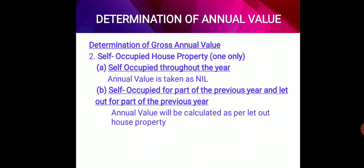Determination of gross annual value for self-occupied house property: only one property can be considered as self-occupied. Case A: self-occupied throughout the year — the annual value is taken as nil. Case B: self-occupied for part of the previous year and let out for part of the previous year — annual value will be calculated in the same manner as discussed for let out house property. If let out for any part, it is treated as let out property.